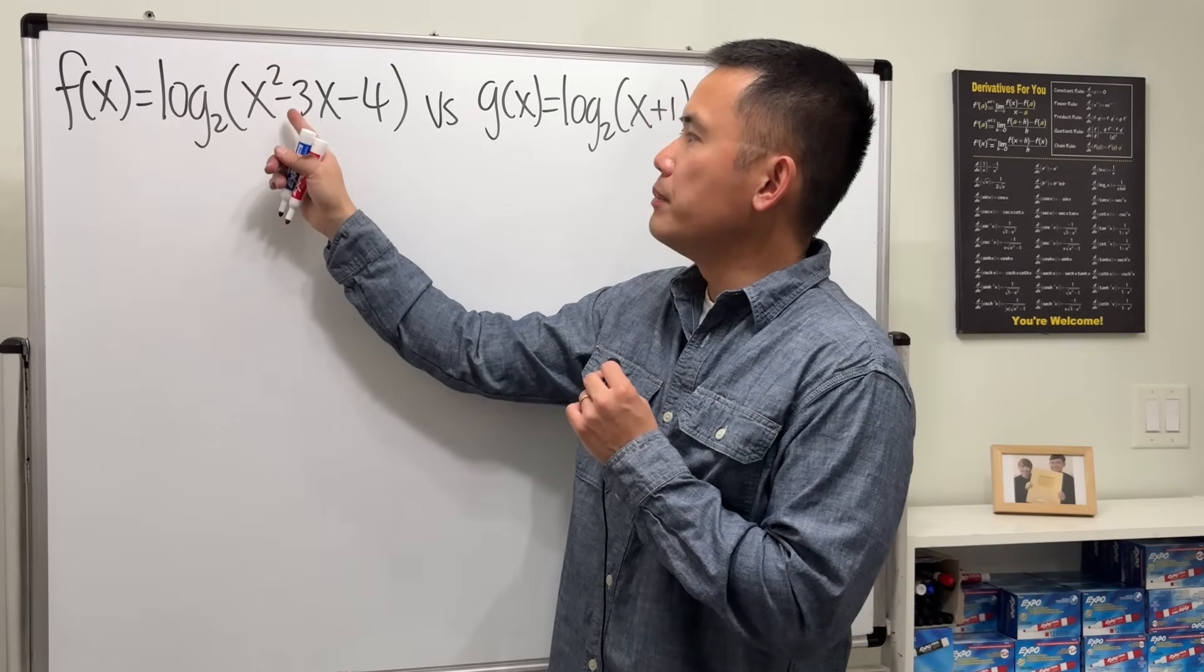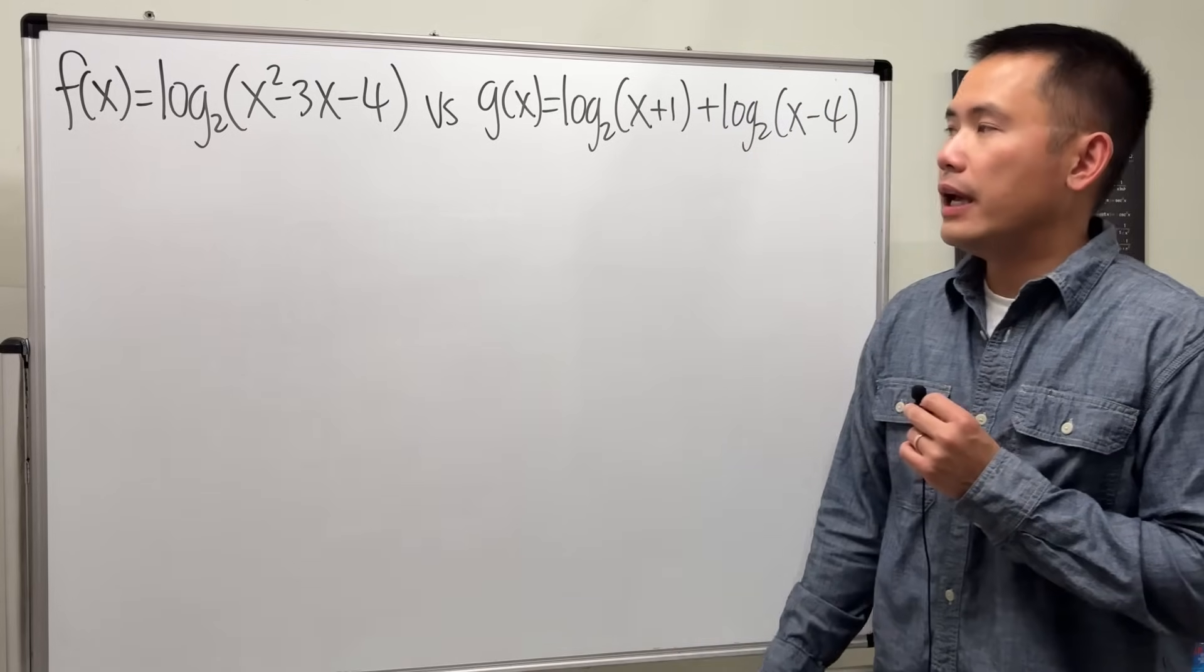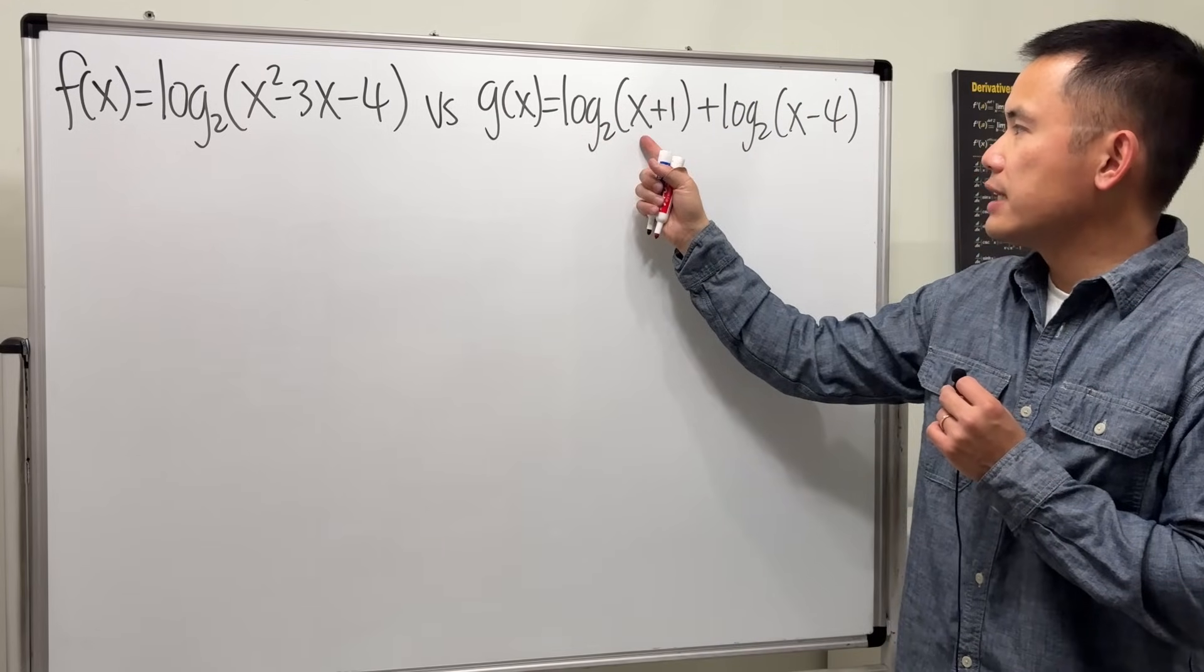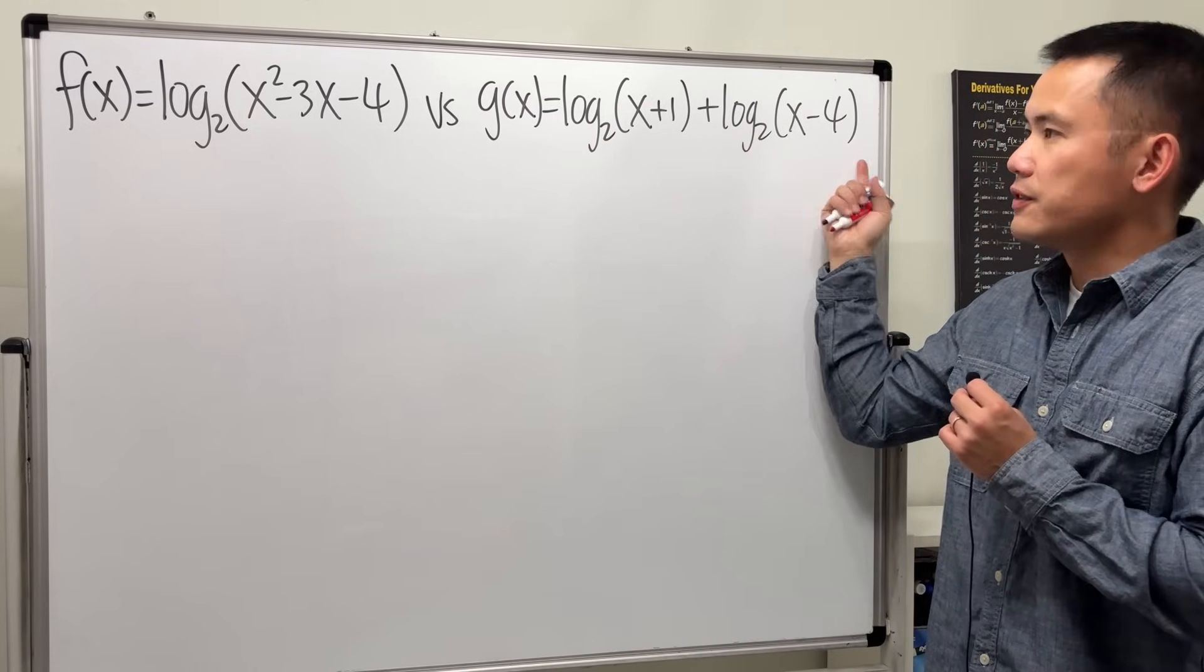is log base 2 of x squared minus 3x minus 4, and the other one is log base 2 of x plus 1 plus log base 2 of x minus 4.